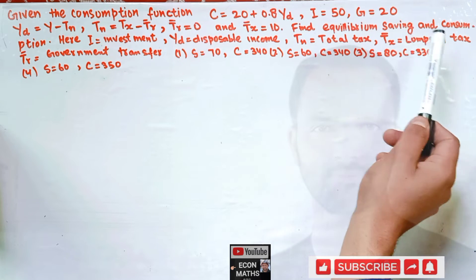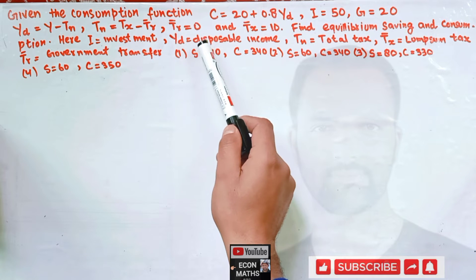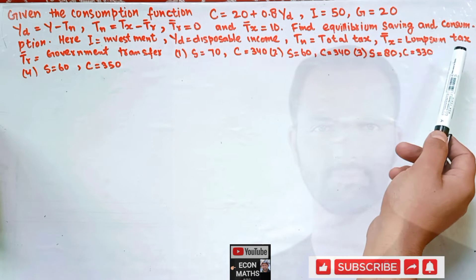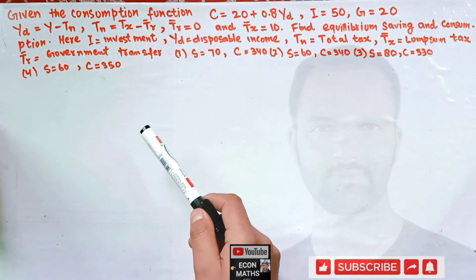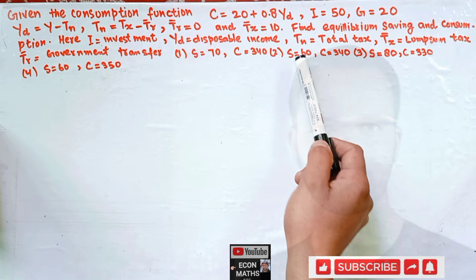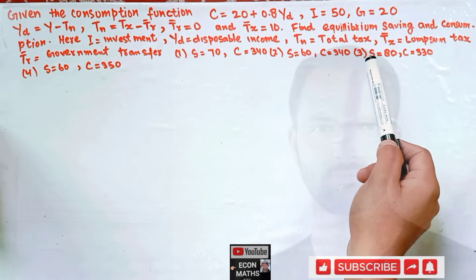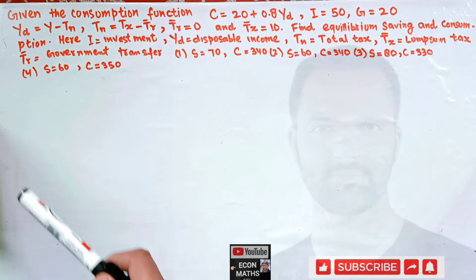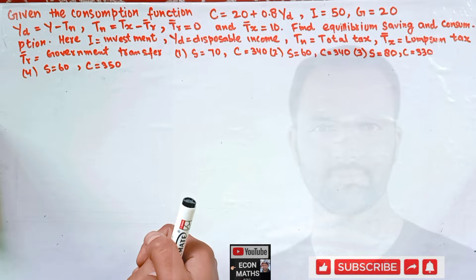We have to find the equilibrium saving and consumption. To summarize the variables: I is investment, Yd is disposable income, TN is total tax, TX̄ is lump sum tax, and T̄R is government transfer. The options given are: S = 70 and C = 340; S = 60 and C = 340; S = 80 and C = 330; or S = 60 and C = 350. Let's try to solve this.